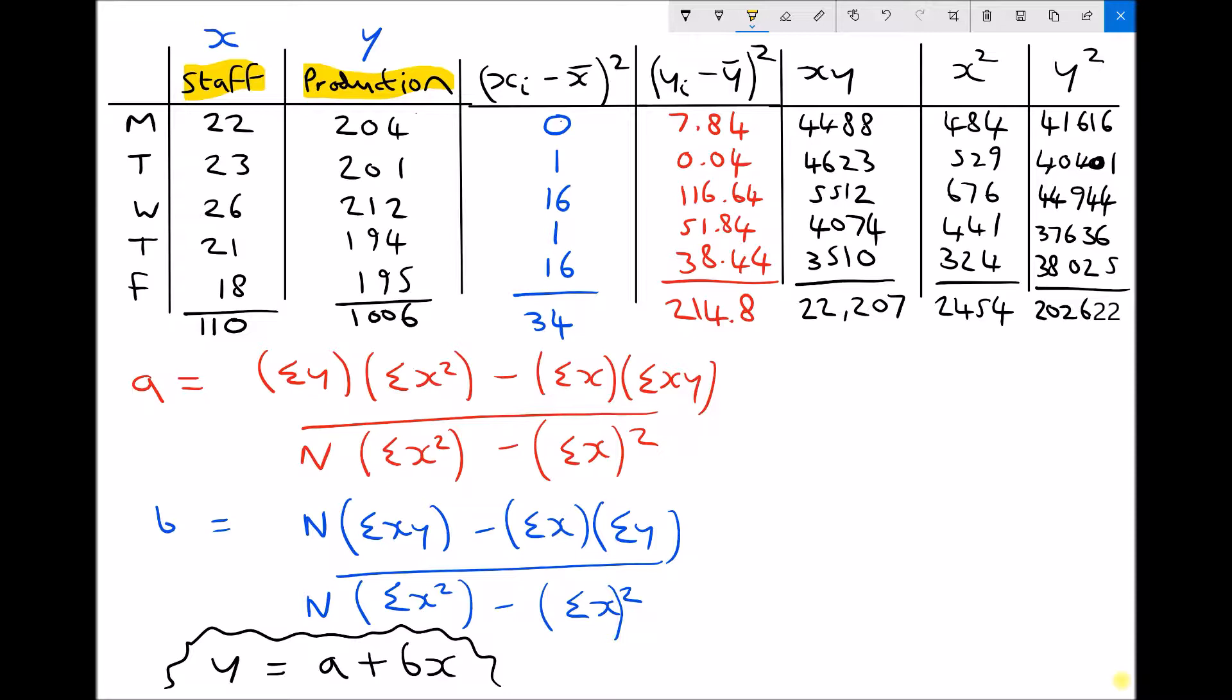When we calculate a and b for the regression line, that corresponds to a straight line graph formula of the form y equals a plus bx. So we're going to calculate a and b, and then we'll have information about the y-axis intercept and the gradient of the straight line of best fit between these two sets of data.